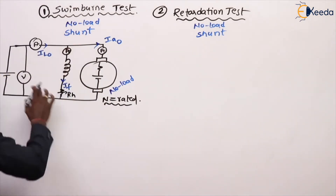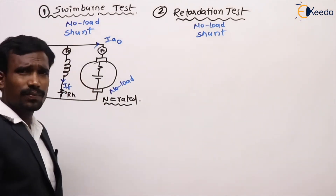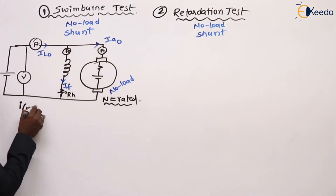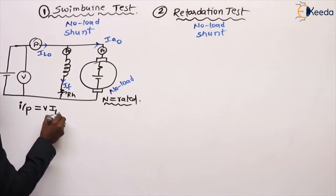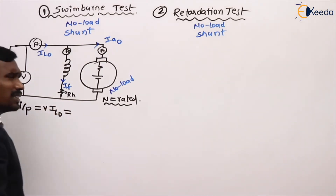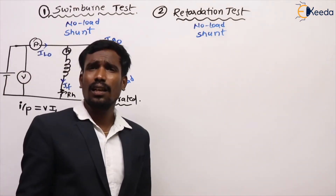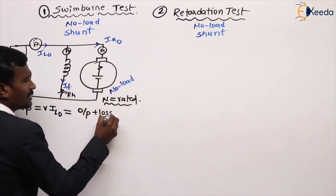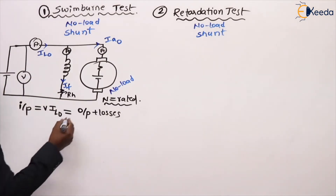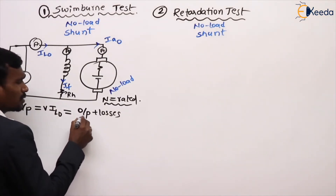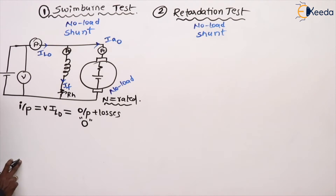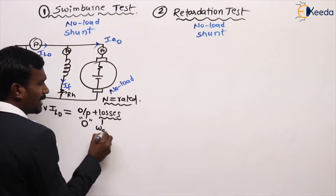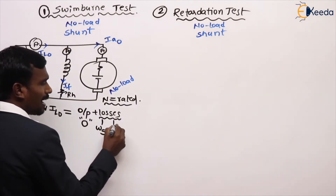What is the power in this test? The power input to the motor is V·IL0. Actually, the power input equals output plus losses. But what is the output here? Zero, because this is no load. We have only losses. What are the losses? Stray losses and copper losses.